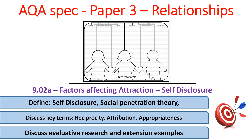Hello and welcome to PsychBoost. In these next three videos we'll be looking at the factors that affect attraction. We'll start with the factor self-disclosure. In this video we'll define what self-disclosure is, define social penetration theory, discuss the key terms reciprocity, attribution and appropriateness in relation to self-disclosure, and of course discuss some evaluative research and other ways we can extend an evaluation in an essay.